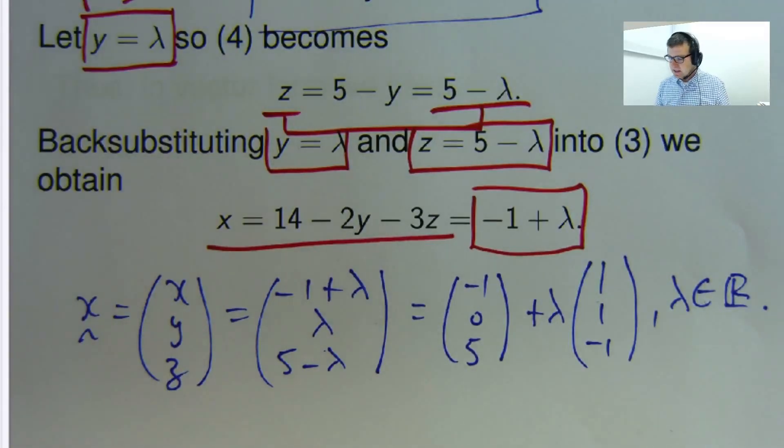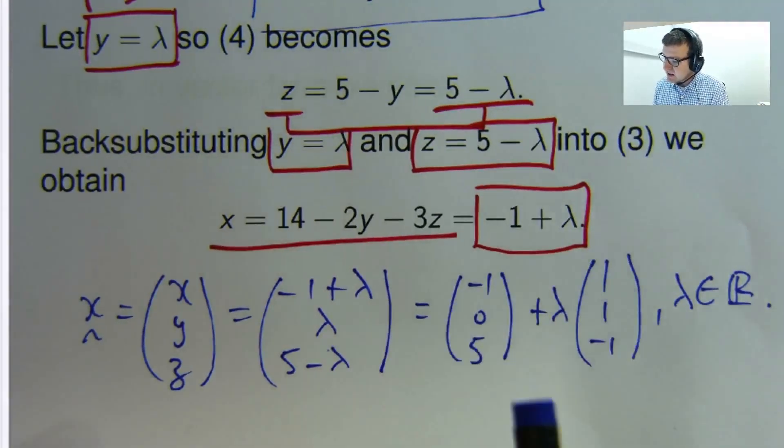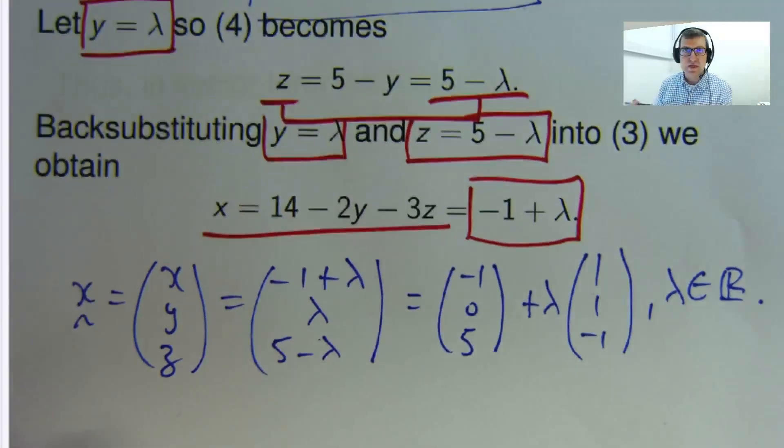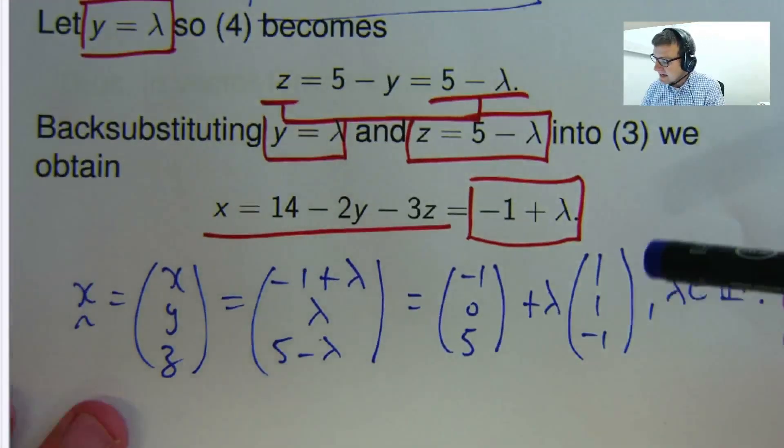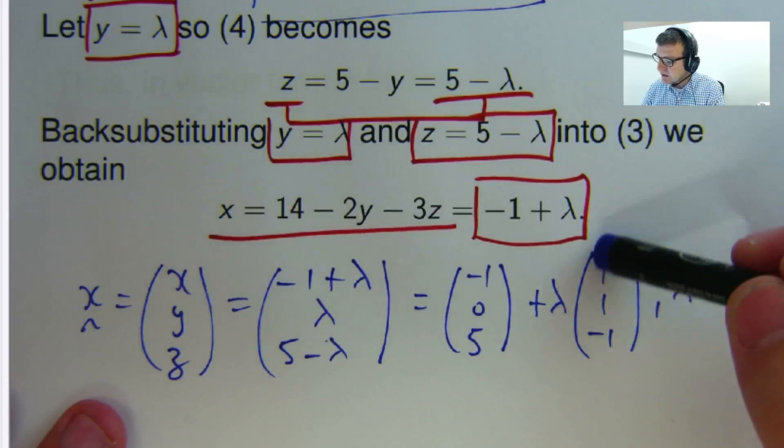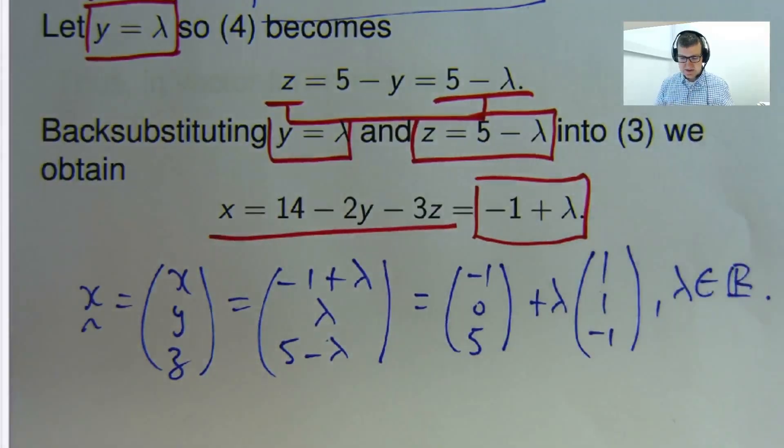Now, this tells us the geometric nature of our line, and the solutions. This represents the line passing through this point, the point negative 1, 0, 5, and it's parallel to this vector, 1, 1, negative 1.